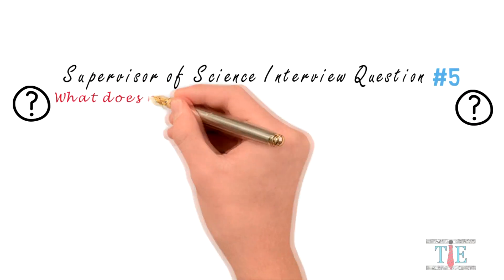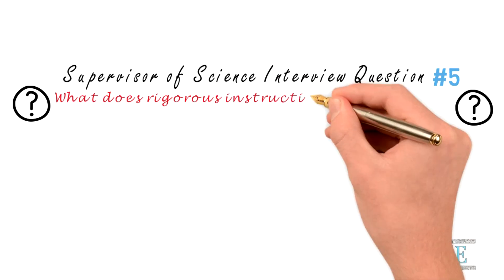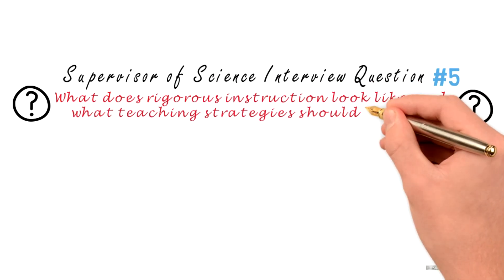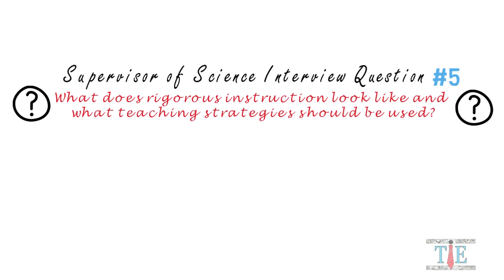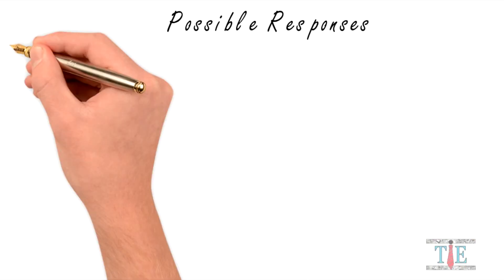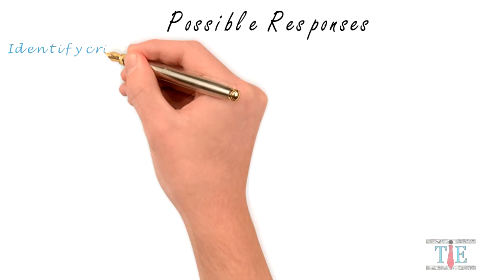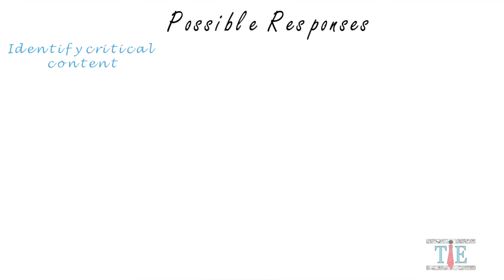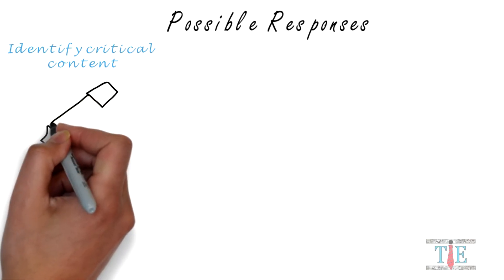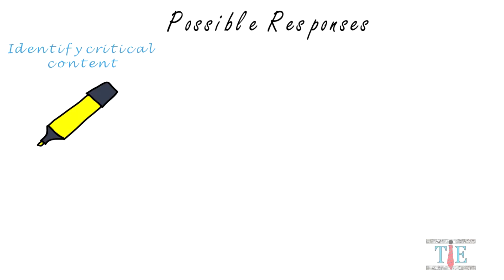Interview question number five: What does rigorous instruction look like and what teaching strategies should be used? There are many acceptable answers, but here are just a few possible responses. First, identify critical content. Some standards are tested more than others and are therefore more important to the curriculum, so teachers must focus on those standards.